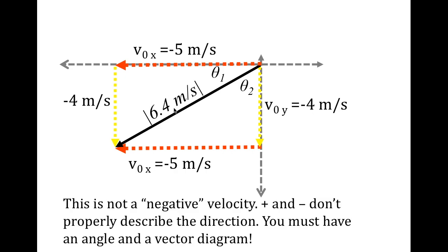One thing to note: the final answer is not negative 6.4 meters per second. When you're at an angle, negative alone doesn't sufficiently describe the direction — that only works in one dimension. When you're in both x and y, you must use an angle and a vector diagram to show the direction. That's how you split vectors into components and combine vectors from their components.